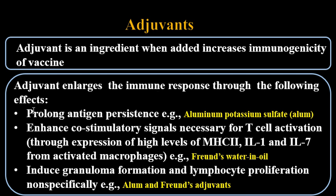Number one: prolonged antigen persistence at the site of immunization. An example for that is aluminum potassium sulfate, or alum.